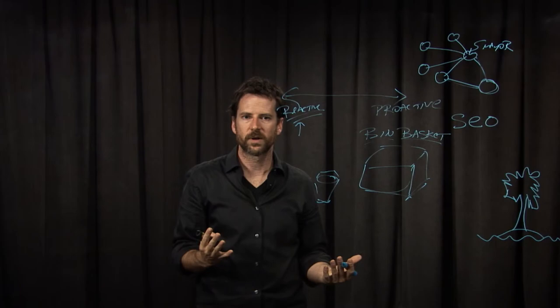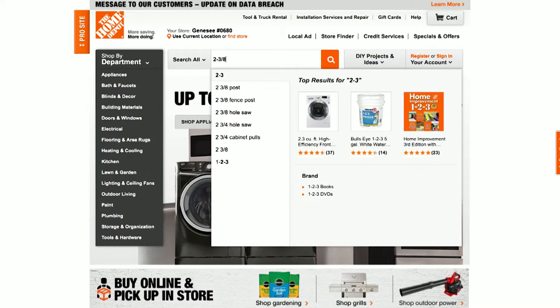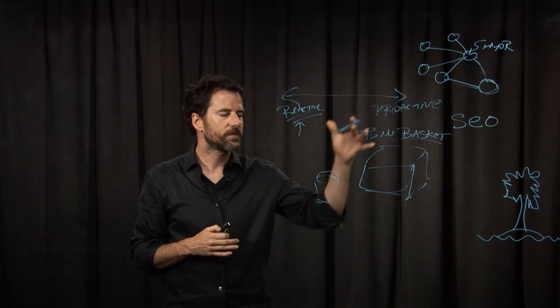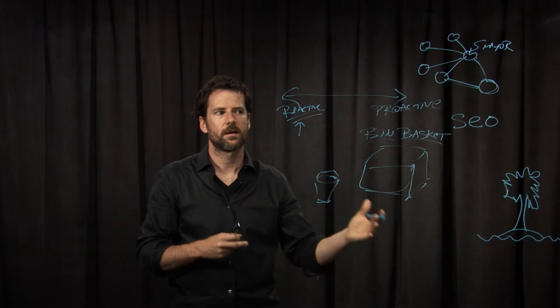Here's another example I like — I was buying a hole saw. As I start typing, it gives me examples. I was able to click on the completion 'hole saw' and see what they had. And in particular, I could further filter — we'll talk about this more in the next video — to just the things that were in store. One thing I really like about this user interface is that it actually showed me which aisle and bay the hole saw was in.